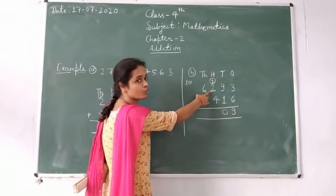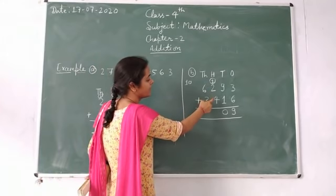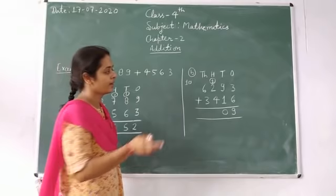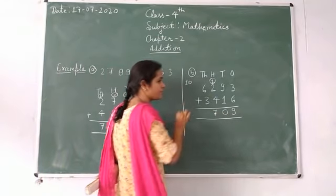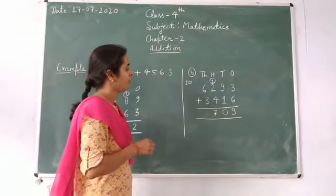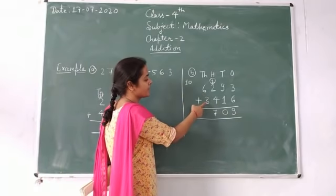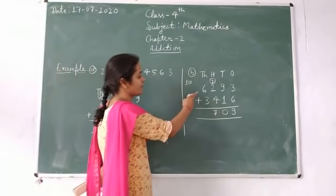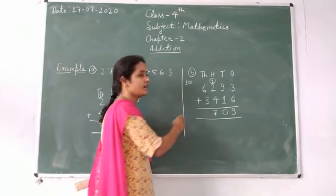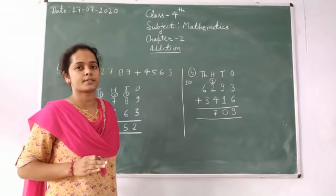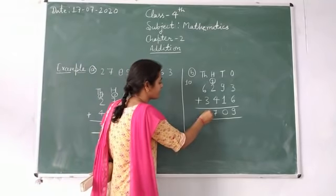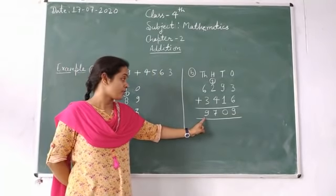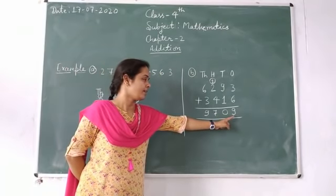Tens place: one plus two — three. And three plus four — four numbers forward from three — we get seven. Next, carry plus three — this is a direct sum — six plus three — three numbers forward from six — we get nine. Finally our answer is nine thousand seven hundred and nine.